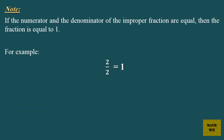Note: If the numerator and the denominator of the improper fraction are equal, then the fraction is equal to 1. For example, 2 over 2 equals 1.